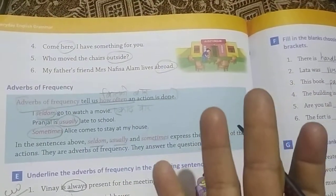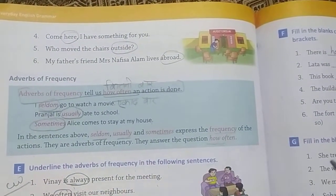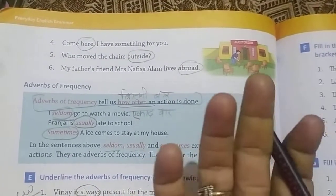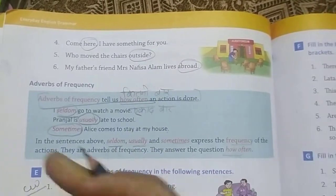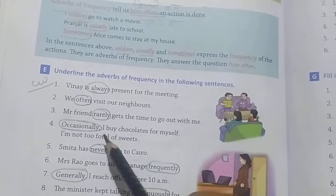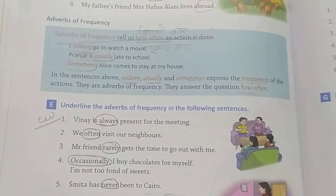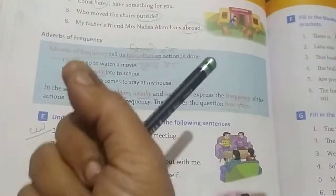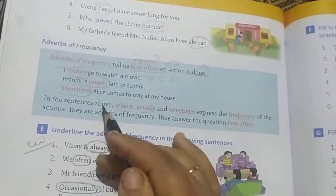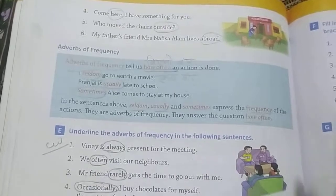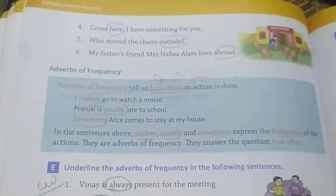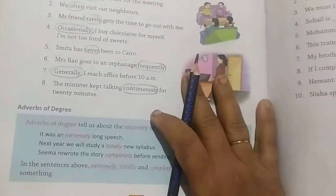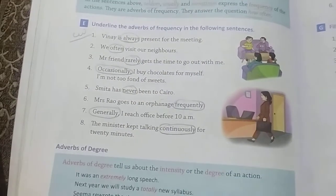Adverb of frequency tells us how many times or how often an action is done. If we ask 'how often' or 'how many times', we get the adverb of frequency. For example: I seldom go to watch a movie. Prangel is usually late to school — how many times? Usually. With this we have also completed exercise E.